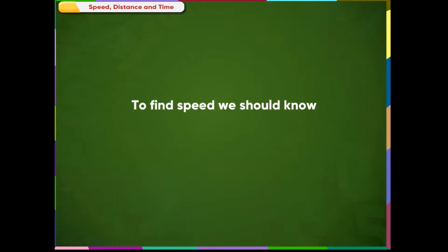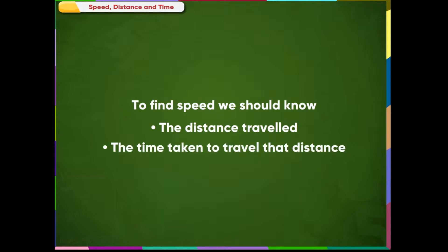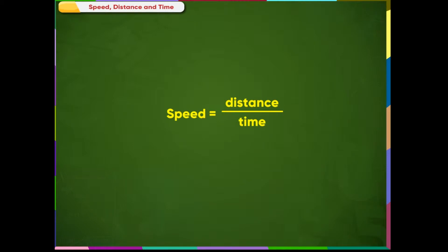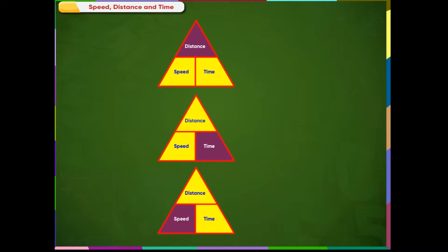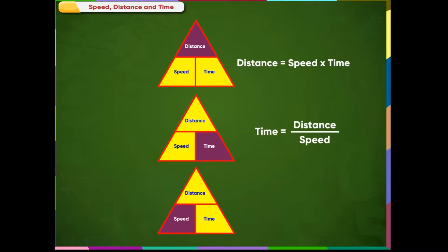Calculating Speed. To find speed we should know the distance travelled and the time taken to travel that distance. The relation between speed, distance and time is: Speed equals distance divided by time. You may find this triangle useful when rearranging the equation to get: Distance equals speed multiplied by time; Time equals distance divided by speed; Speed equals distance divided by time.